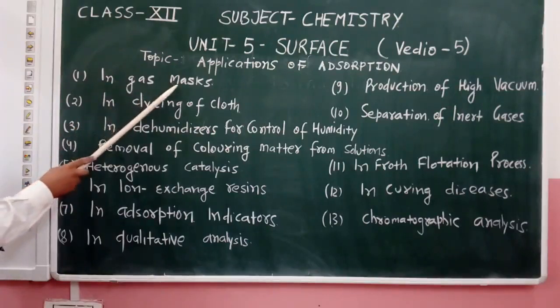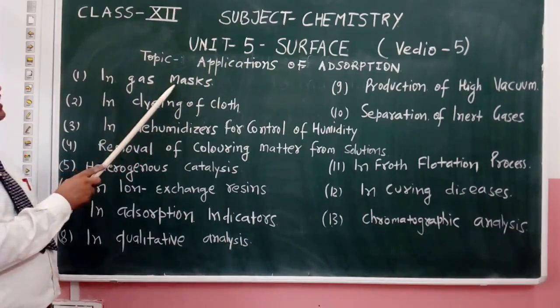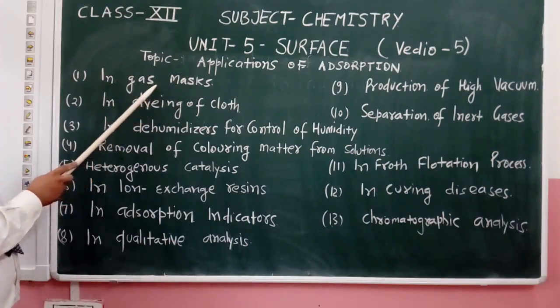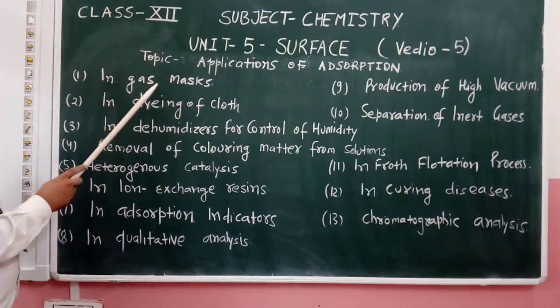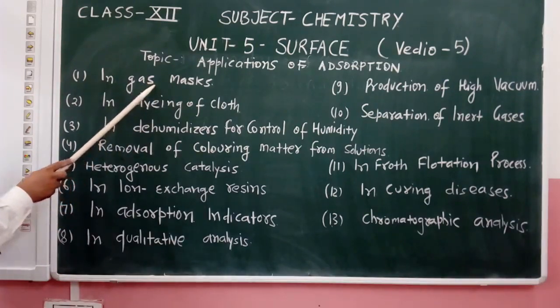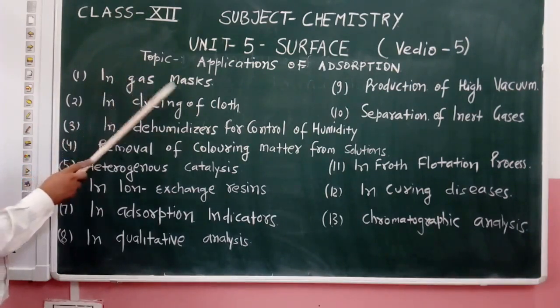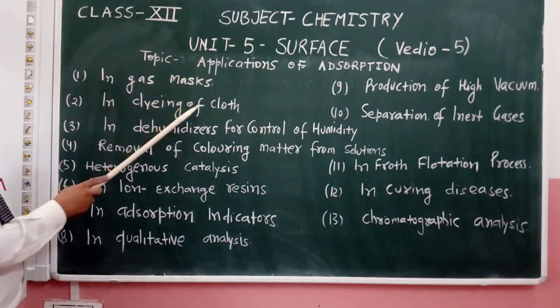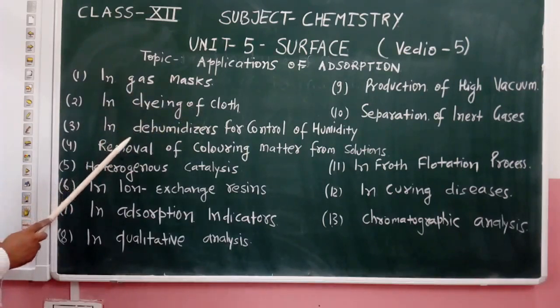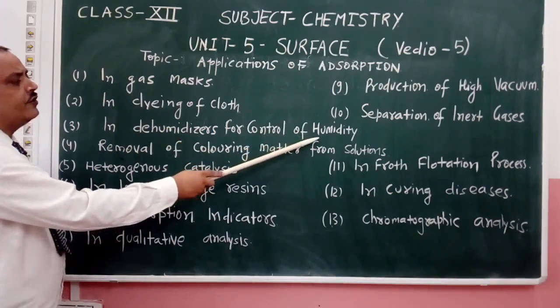First application: in gas masks. We use the process of adsorption in gas masks in different industries and factories where masks are used to prevent harmful gases from reaching the workers. Second application: dyeing of cloth - dry cleaning and dyeing of cloth. Third application: in dehumidifiers for control of humidity.